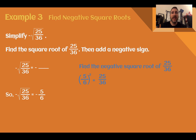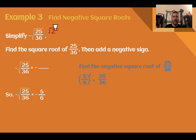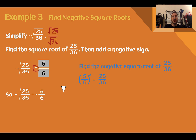Example 3, find negative square roots. Simplify negative square root of 25 over 36. We're going to find the square root of the fraction inside and then add the negative sign to our answer at the end. When doing the square root of a fraction, you're doing the square root of the top divided by the square root of the bottom. The square root of 25 is 5 and the square root of 36 is 6, so our square root is 5 over 6, and we add the negative sign out front: negative 5 over 6.